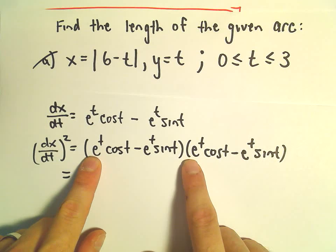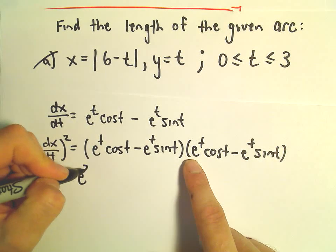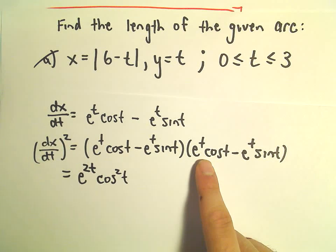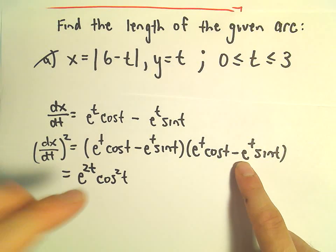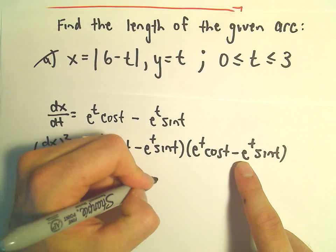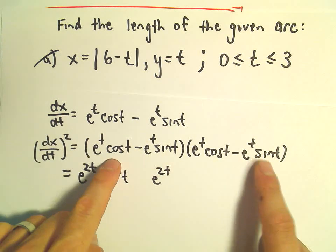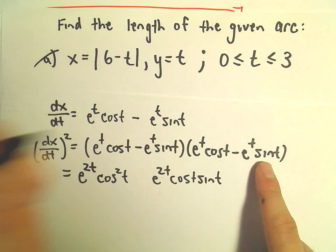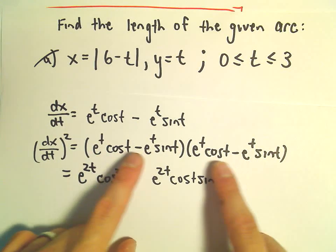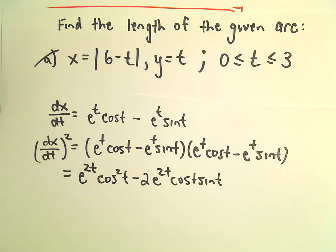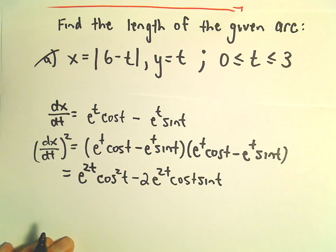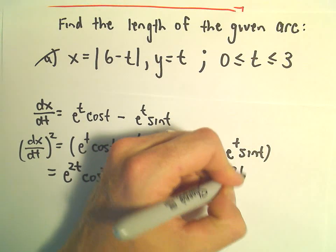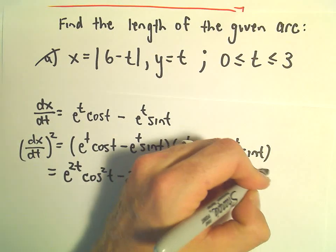Now if we take that expression and square it — e to the t cosine t minus e to the t sine t, all squared — when we distribute, e to the t times e to the t gives us e to the 2t. We get e to the 2t cosine squared t, then negative 2 e to the 2t cosine t sine t, and then a positive e to the 2t sine squared t.